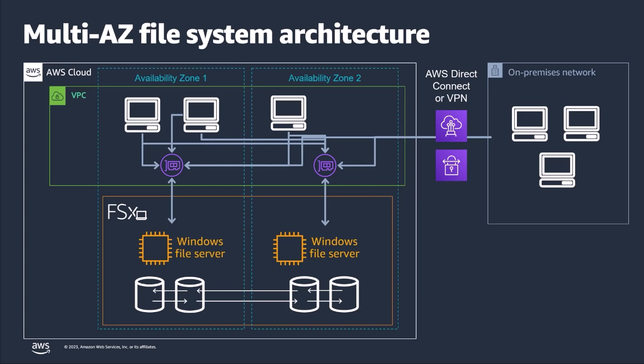A continuously available share may not be appropriate for all workloads, and therefore it is not enabled by default on Amazon FSx for Windows File Server. There is a minimum performance impact for leveraging a continuously available file share, which is why it's not on by default — specific workloads benefit more from it than standard file reads and writes on an SMB file system.